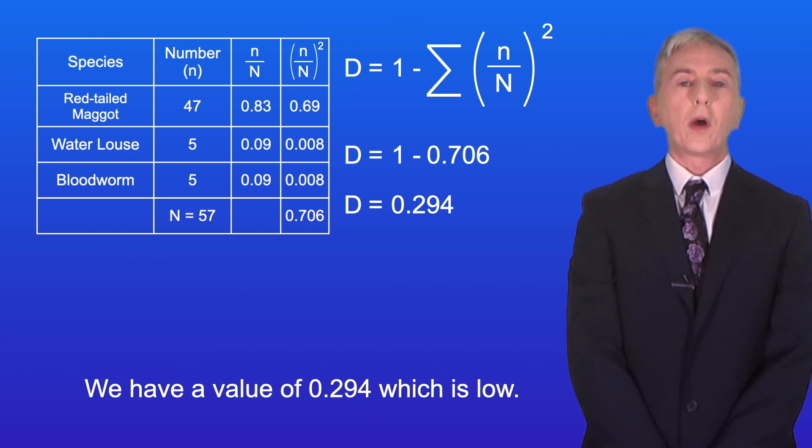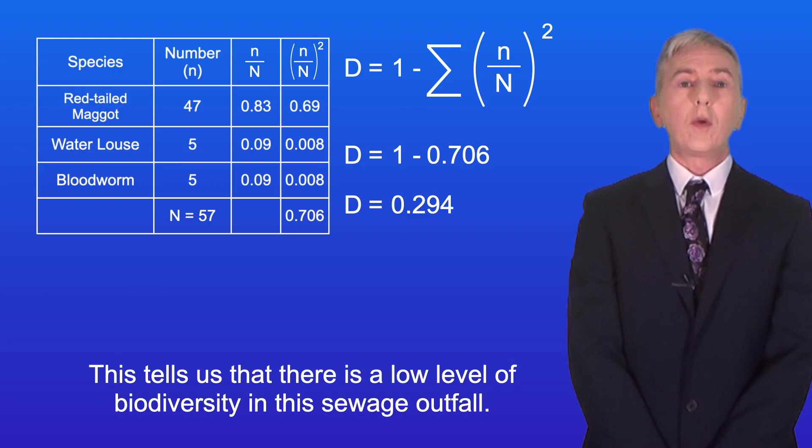We have a value of 0.294, which is low. This tells us that there's a low level of biodiversity in this sewage outfall.